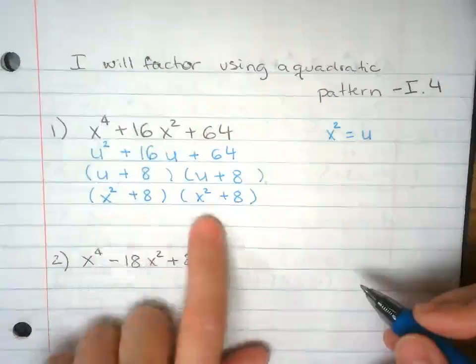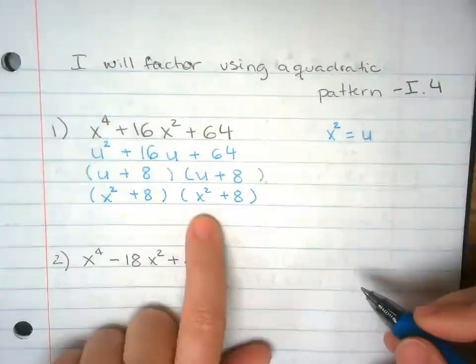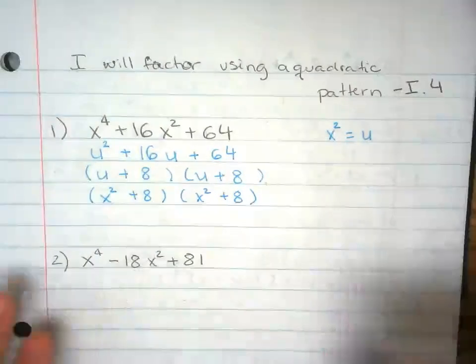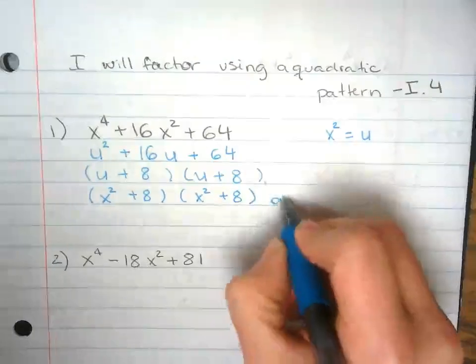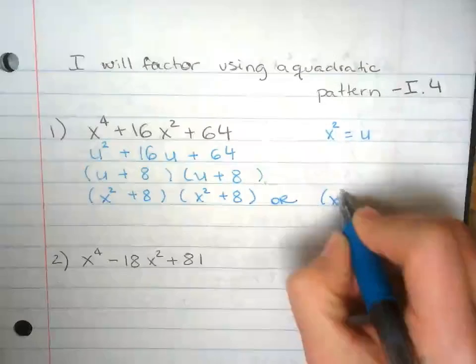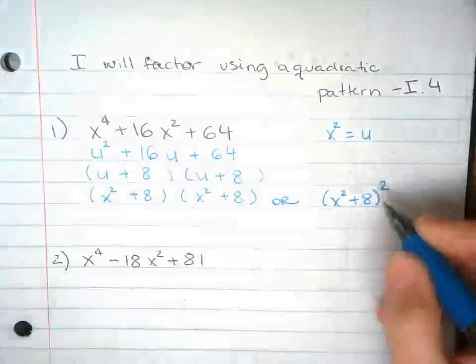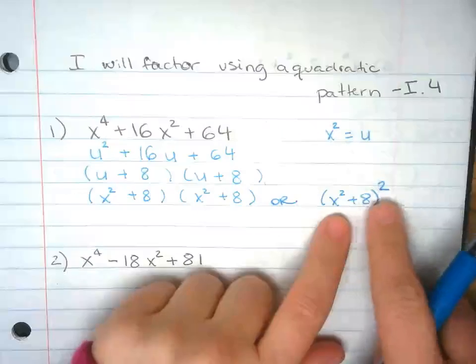Can I factor this out? Can I simplify this some more? You can leave it as that or you can write x squared plus 8 squared. And that means, remember that square represents,